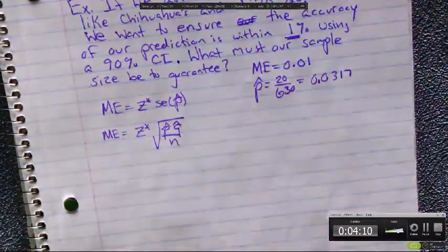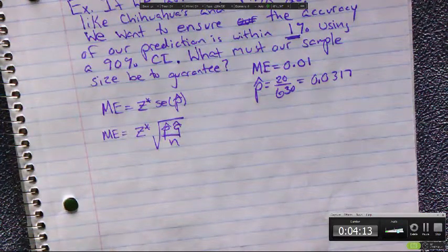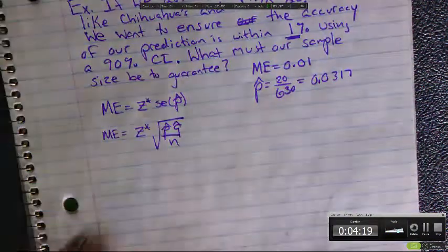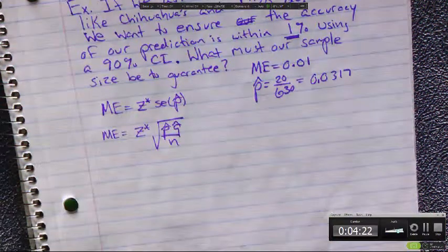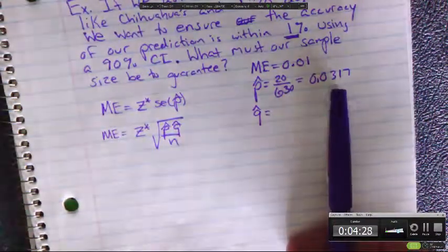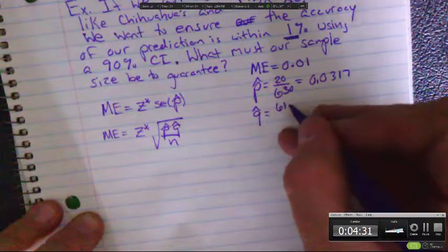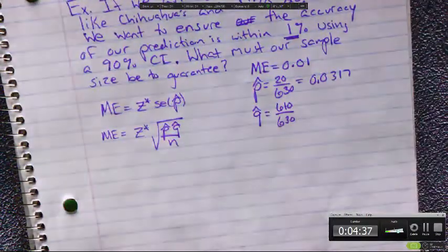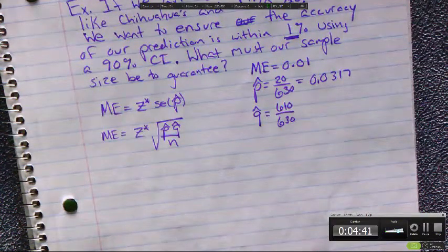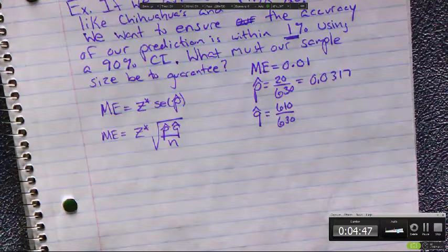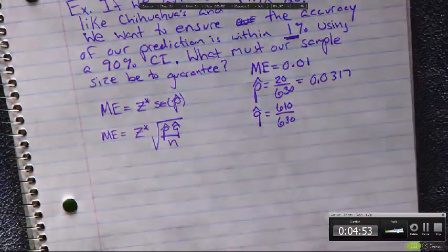0.0317, right? Technically if you wanted to be guaranteed as close as possible, you would use 20 over 630 for p hat. And so q hat, if we wanted to guarantee we were exactly right, we could use 610 out of 630. If 20 out of 630 like chihuahuas, then 610 out of 630 do not like chihuahuas. These two both add up to 1. It's categorical because it's either they like chihuahuas or they don't.